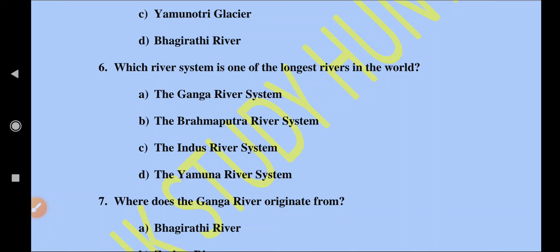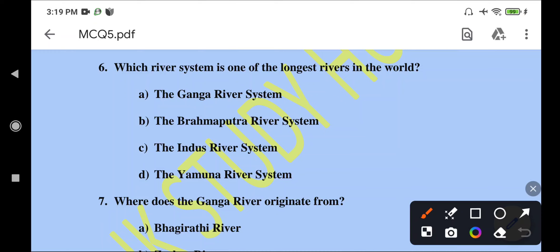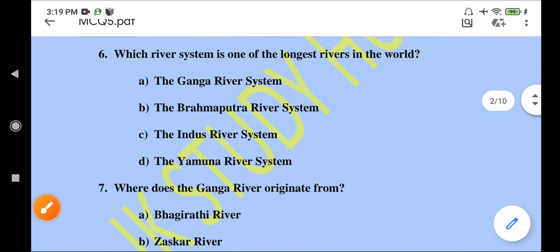Which river system is one of the longest rivers in the world? We have four river systems given. Comparing them, the longest here is the Indus River System. We can go with the Indus River System.